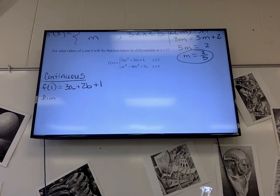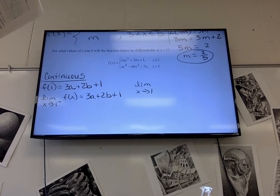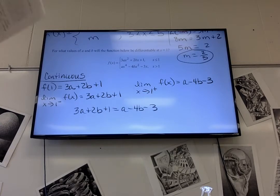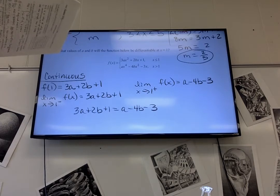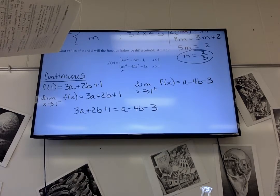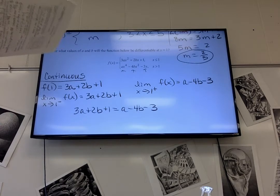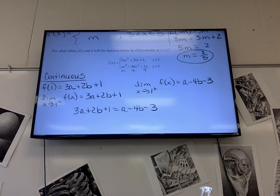Then the limit as x approaches 1 from the left is the same thing. It's 3A plus 2B plus 1. The limit as x approaches 1 from the right is A minus 4B minus 3. So those two things have to be equal. We've plugged 1 in for x. Oh. That's helpful. It is helpful, especially that it's 1.